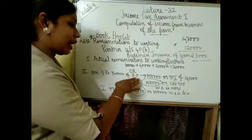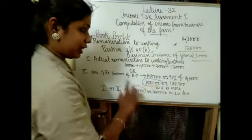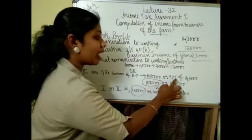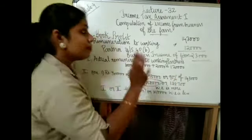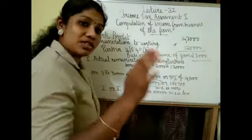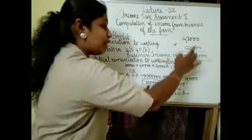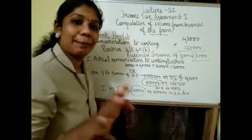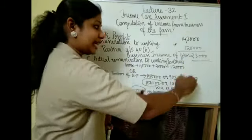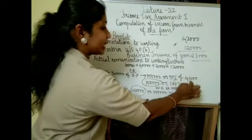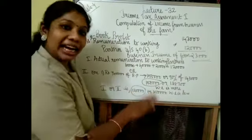On first rupees 3 lakh book profit, profit is 1,50,000. This is the balance part of 90% of 3 lakhs. This is 1,43,000. 90% we are going to take. This is 90% of 3 lakhs.